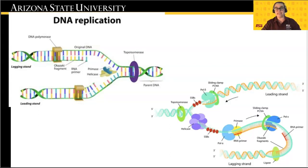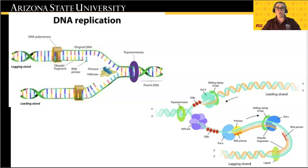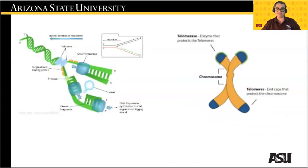The enzyme DNA polymerase I digests the RNA primers with endonucleases and replaces them with DNA. This portion of the replication synthesizing process creates the two new daughter strands and is referred to as elongation.